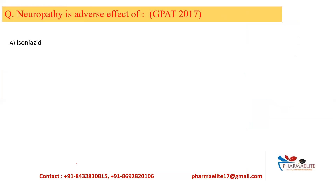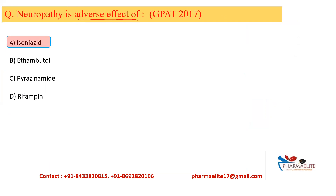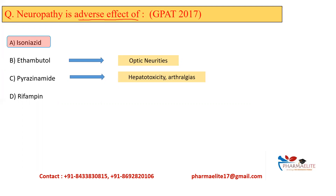This is a GPAT 2017 question: neuropathy as an adverse drug effect — the answer is Isoniazid. Looking at the other options: ethambutol's adverse drug reaction is optic neuritis, that is red-green color blindness, which is very important for GPAT and NIPER. Pyrazenamide causes hepatotoxicity and arthralgia. Rifampicin causes discoloration of body fluids and hepatotoxicity — discoloration of body fluids is an important point to remember.